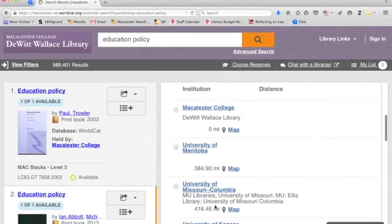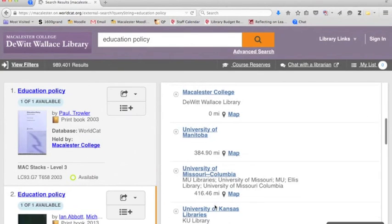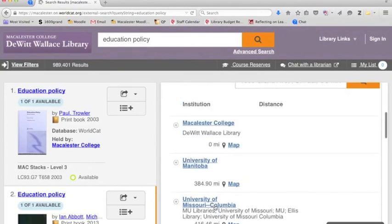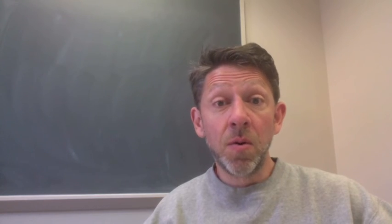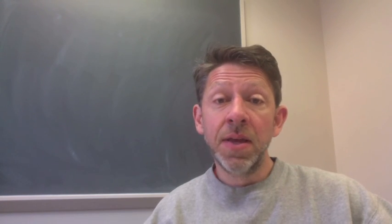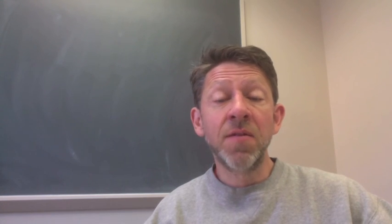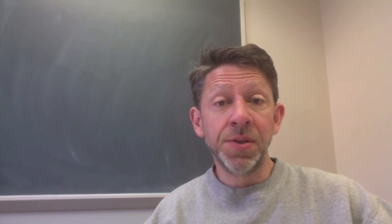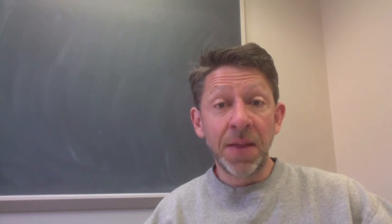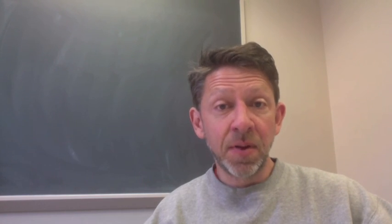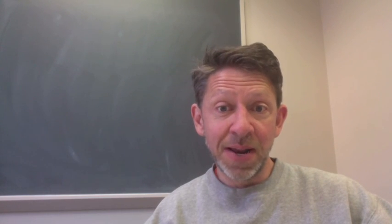WorldCat shows me libraries closest to me based on where I'm physically connecting to the Internet. So, why should I care about Macalester WorldCat? It's the main way to find resources that we own. And that's a tip from the DeWitt-Wallace Library.